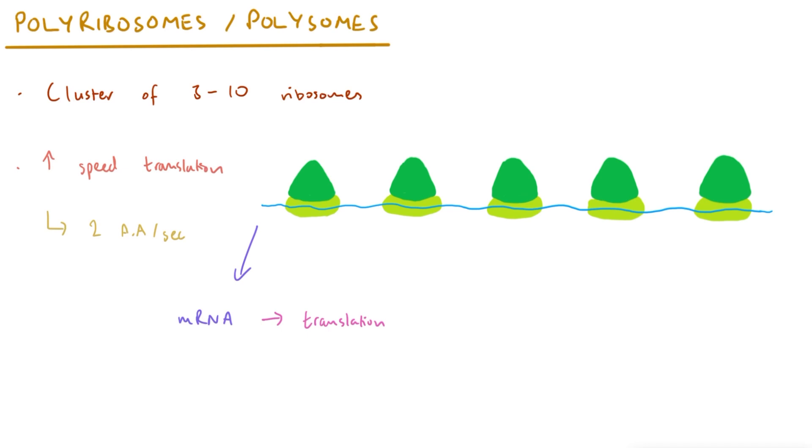If you have 10 ribosomes within a polyribosome, that's a total of 20 amino acids being added to 10 separate polypeptide chains—two amino acids onto each polypeptide chain. The ribosomes within a polyribosome are a set distance apart.